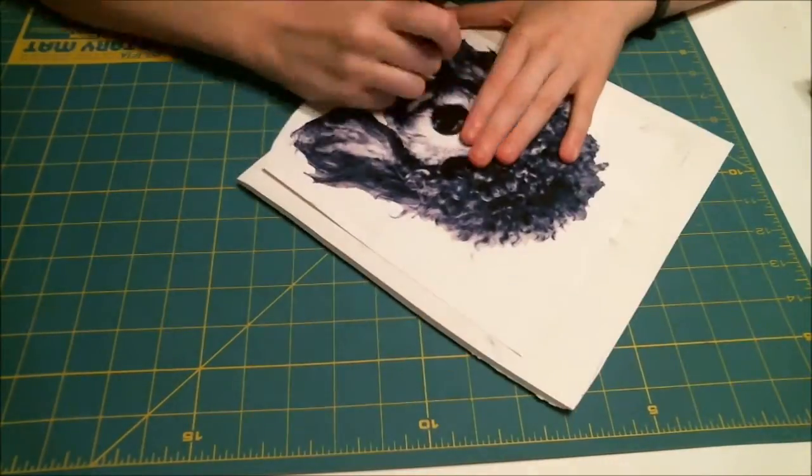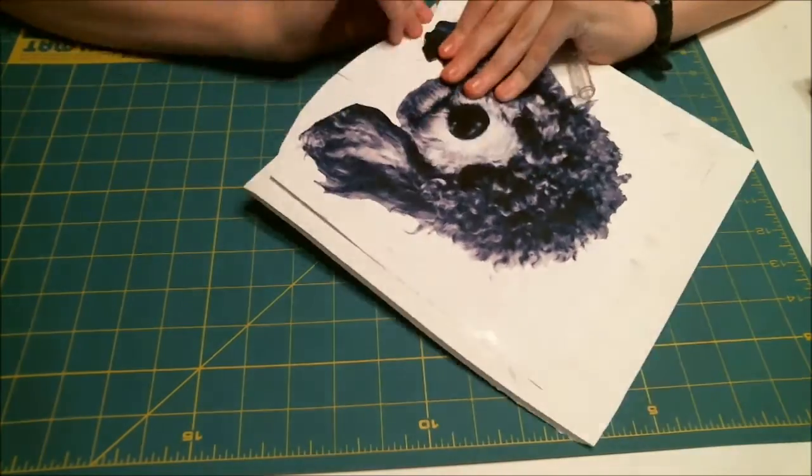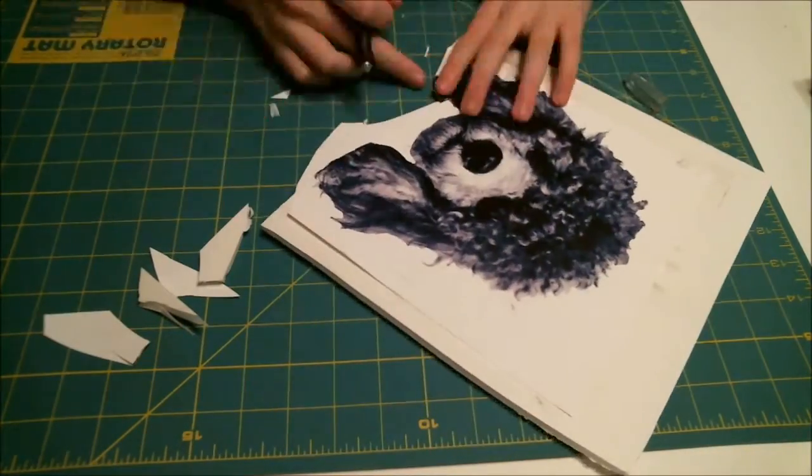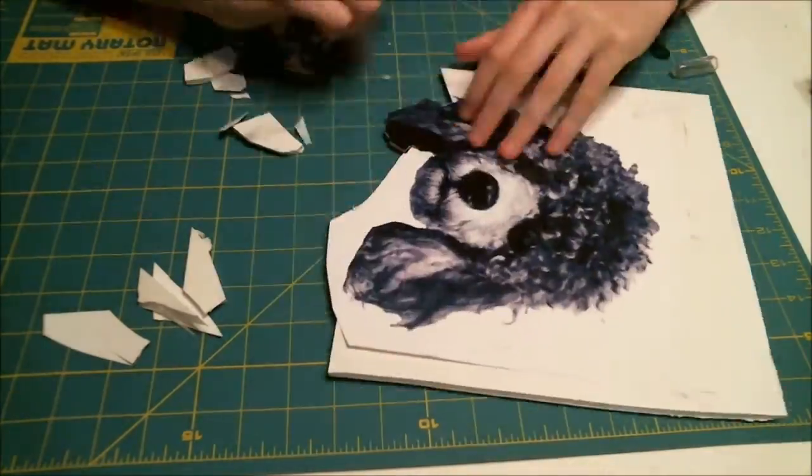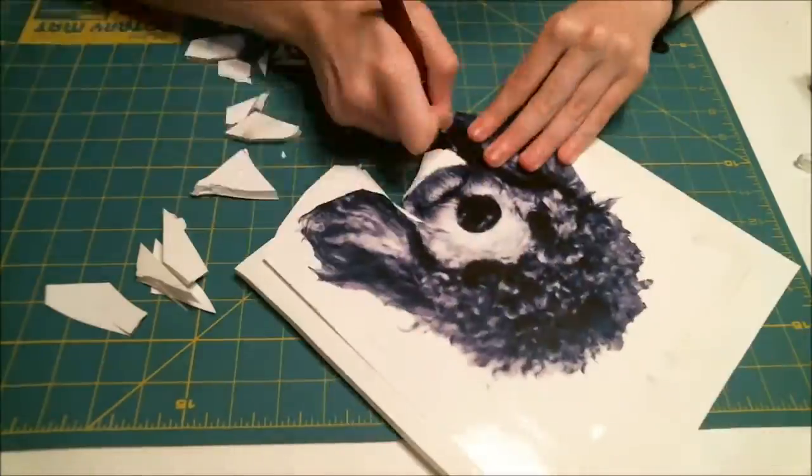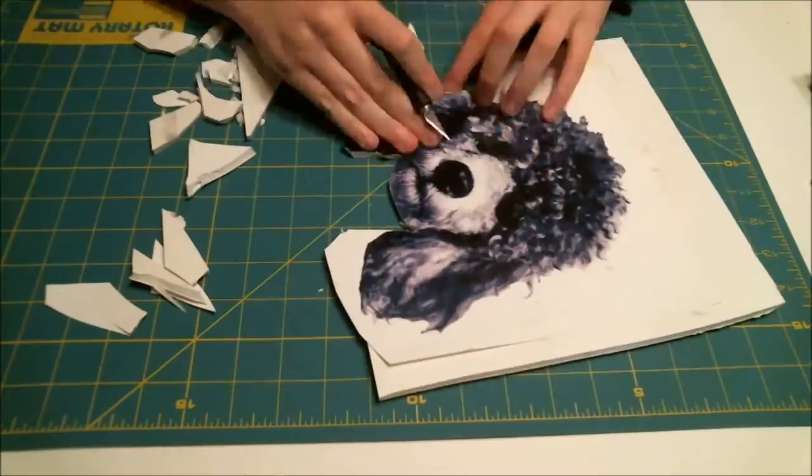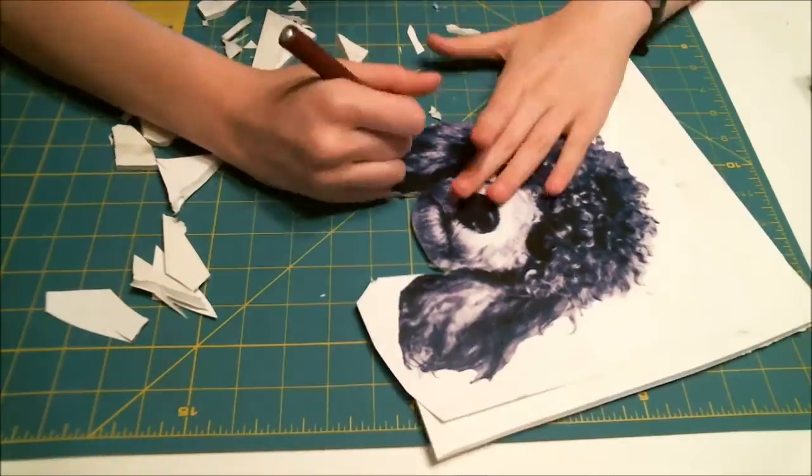Once your foam board is dry, again it'll probably take around 30 minutes, use an X-Acto knife to cut out all the little foam pieces you're going to need to. If you have a cat, it's easy. If you have a dog like mine that's curly, it's going to take a bit of time and patience, but that's okay.